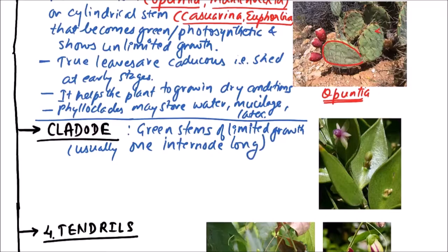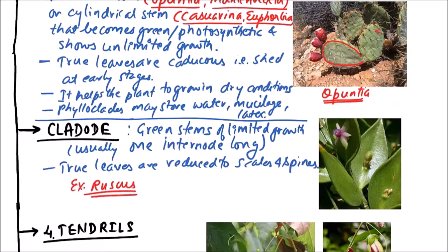Cladode - true leaves are reduced to scales and spines. The example is Ruscus. This is Ruscus.